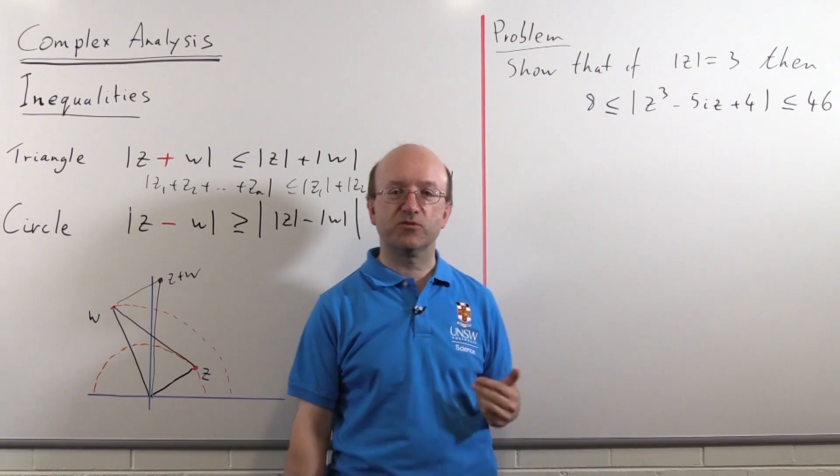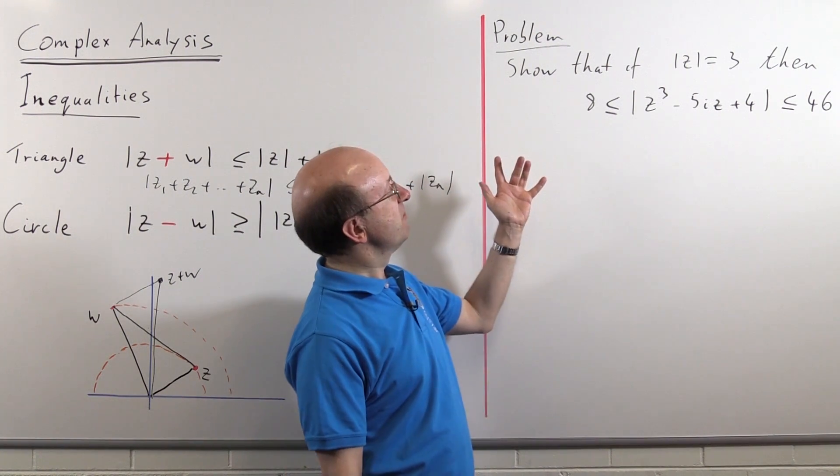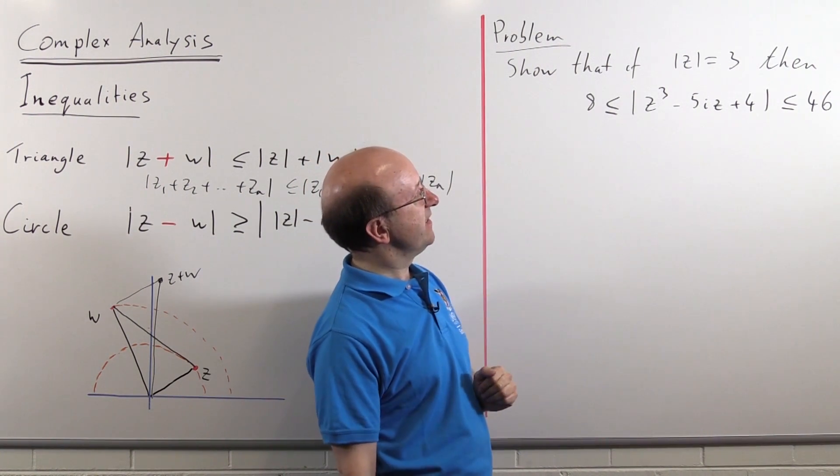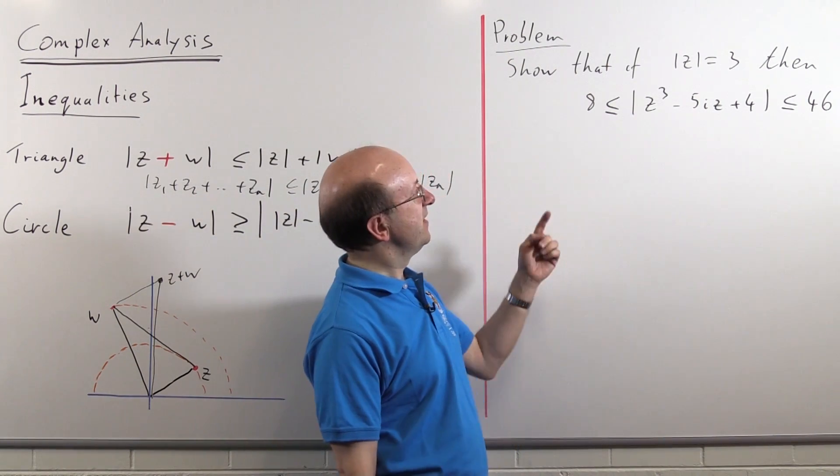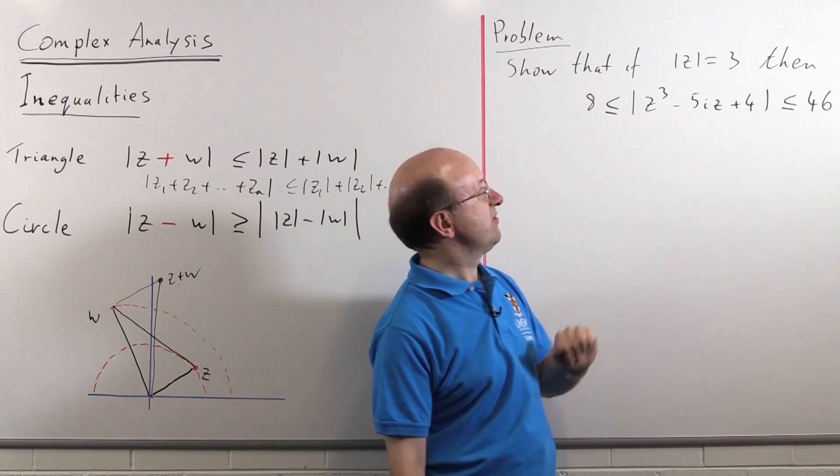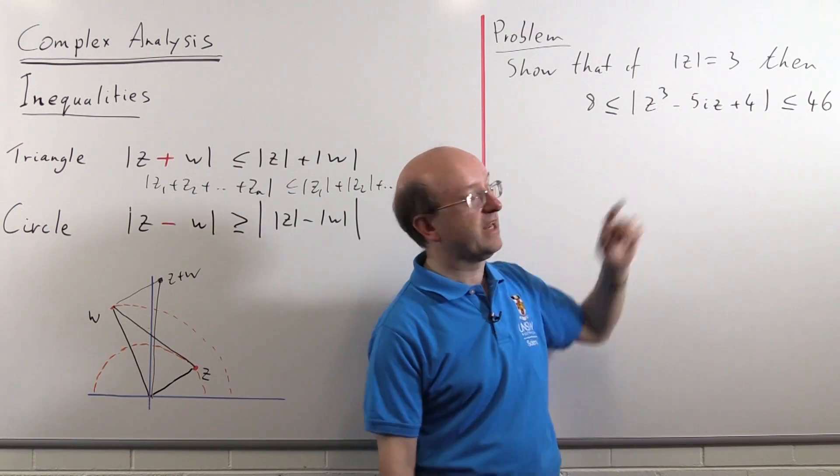Okay, so here is a typical problem of the sort we face in the start of our complex analysis course. We're going to show that if the modulus of z is equal to 3, so we're on the circle center of the origin radius 3, then this polynomial here, z cubed minus 5i z plus 4, its absolute value lies between 8 and 46.